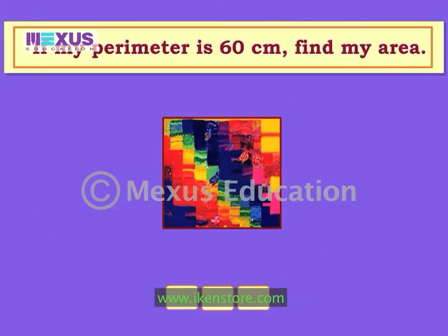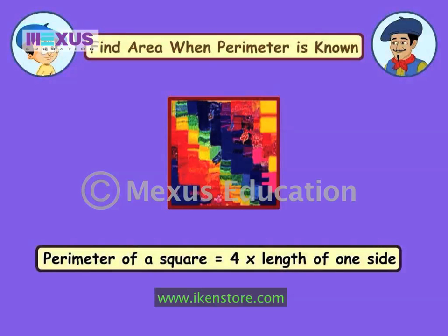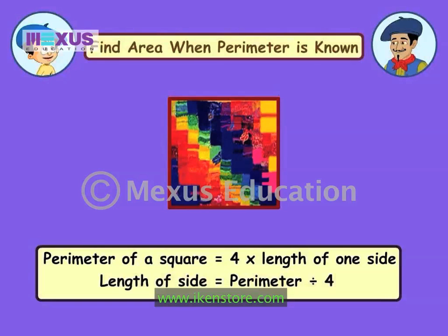If my perimeter is 60 centimeters, find my area. How can we find the area? To find out the area of a square, we need to know the length of its side. But all we know is the perimeter. Do you remember the formula for perimeter? Can you figure out the length of this square if you know its perimeter? The perimeter of a square is equal to 4 times the length of its side.